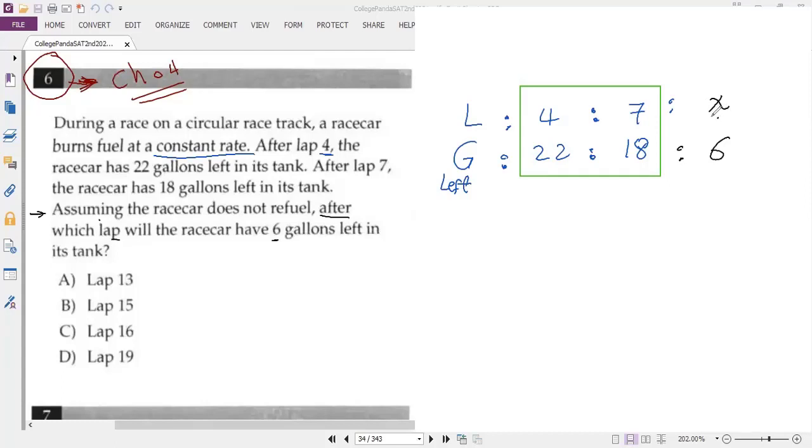So if we find x, this will be very easy. Now first of all, we have to check the rate. The rate of consumed fuel is the difference between laps (7 minus 4) over the difference in gallons (22 minus 18). You can make it the other way, no worry about making it opposite.